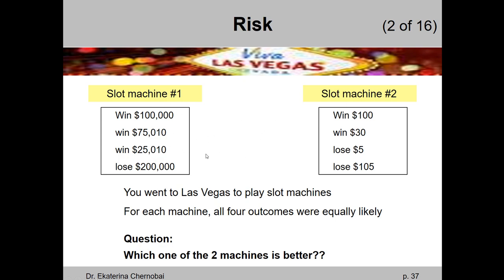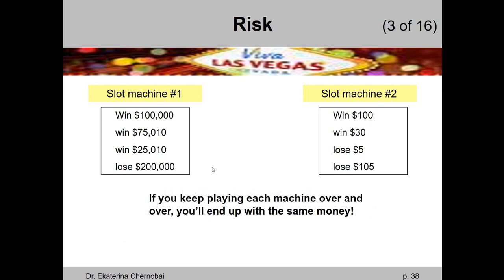These four outcomes are equally likely and randomly repeat for each machine. Which one has shown more risk — which one has been riskier, and which one safer? First, if you do the right math, you realize it doesn't matter which machine you play if your only goal is making money, because you end up with the same amount on average. Add the four possible numbers and divide by four — that's your average gain per game. For slot machine number one, that's $5. If you do the same math for slot machine number two — add 100, 30, negative 5, negative 105 and divide by four — you also get $5.